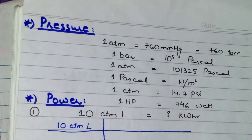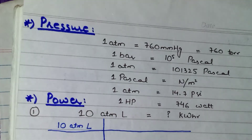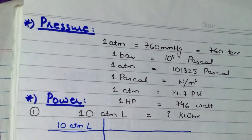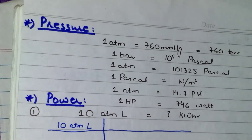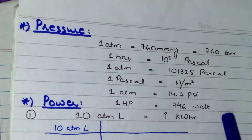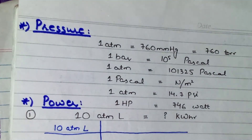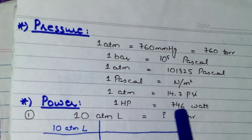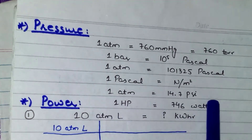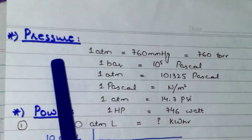There are also other units of pressure and other relationships of pressure as well, but these are the most commonly used units and conversions. So I have written all these conversions here — it's better if you remember them by heart. Then comes the unit of power: 1 hp equals to 746 Watt. We are not going to do the conversion of power, but we will require this 1 hp = 746 W relationship while doing these pressure conversions.